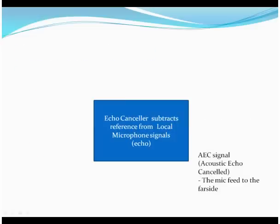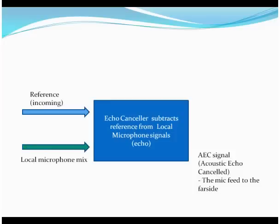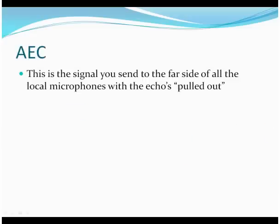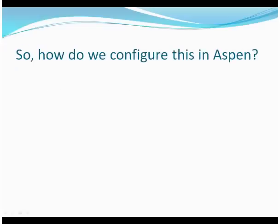You want it to be simple. The way an Echo Canceler works is it takes in the signal that is the reference from the far side. At the same time, it's also monitoring the local microphone mix. Then the processor crunches away at the figures in the DSP and subtracts the reference from the local mix, and that yields the signal going to the far side. That's the Acoustic Echo Canceler — AEC — the signal you send to the far side of all the local microphones with the echoes pulled out.